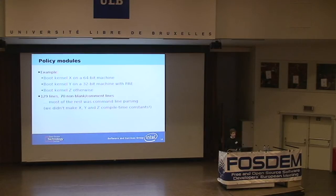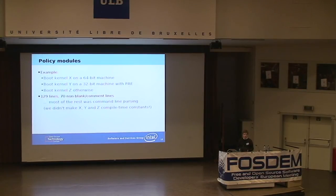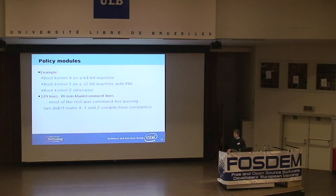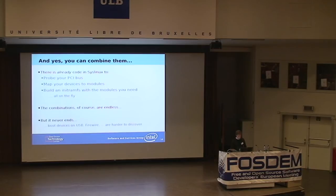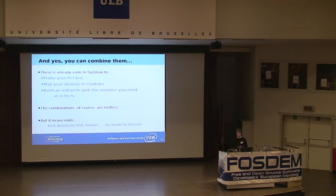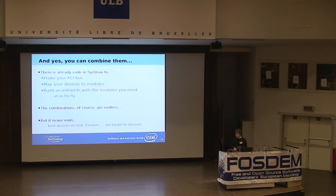A module to implement this particular policy was 129 lines long, 70 of which were something other than blank lines or comments. Most of that code was taken up by picking apart the command line and putting it back together again — which wouldn't have been necessary if these had been compile-time constants, but this was meant to be a general purpose module. We also have code right now that can probe your PCI bus, map those devices to the corresponding modules in the Linux kernel, then build you an initramfs with only those modules, and do all of this at boot time — for the specific system you're booting on. This is already working code.